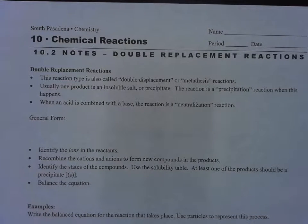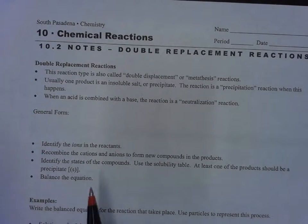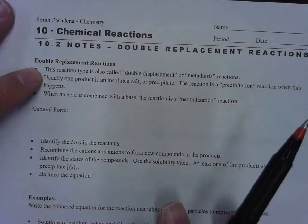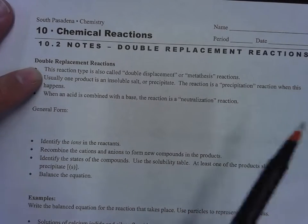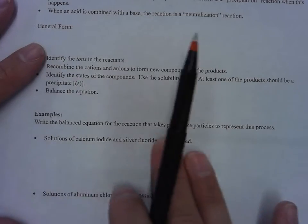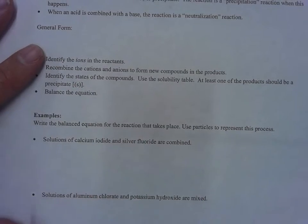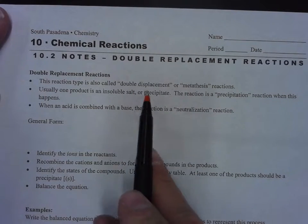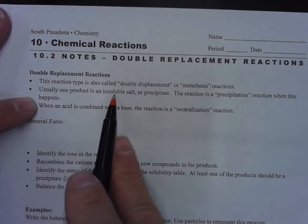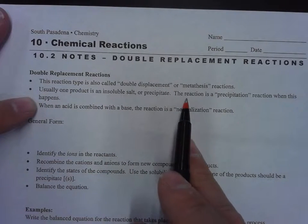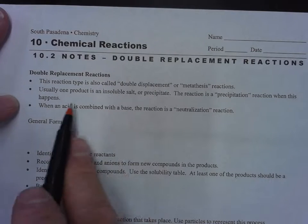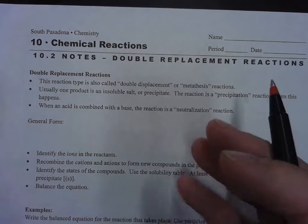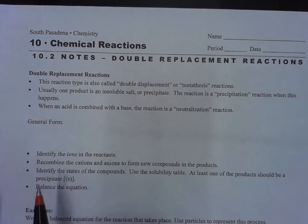Okay, this is notes 10.2 on double replacement reactions. This type of reaction is also called double displacement. Usually one product is an insoluble salt or precipitate—this is a precipitation reaction. When an acid is combined with a base, the reaction is called a neutralization reaction. They neutralize each other and the pH becomes 7.